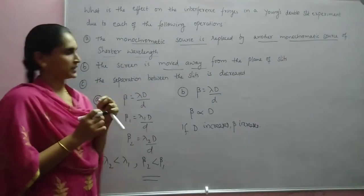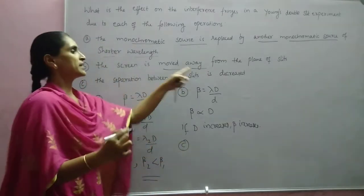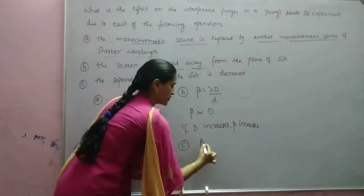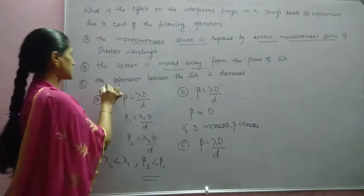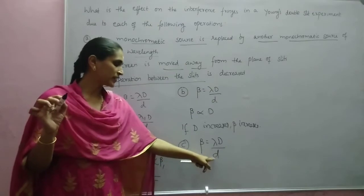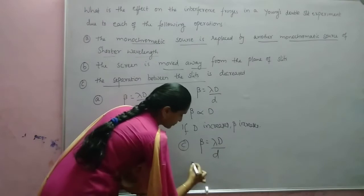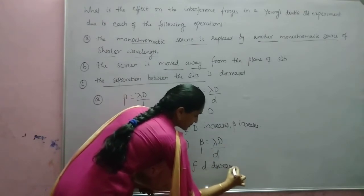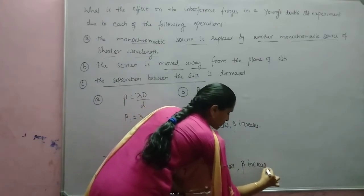In the third case, the separation between the slits is decreased, which means small d decreases. From the expression beta equals lambda·D/d, beta is inversely proportional to d. So when small d decreases, beta increases.